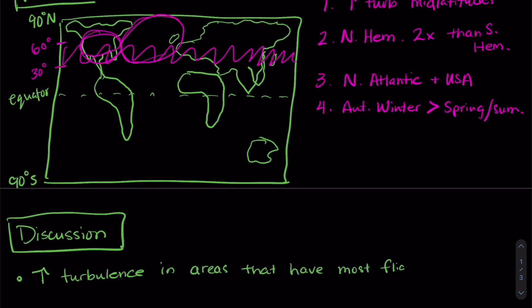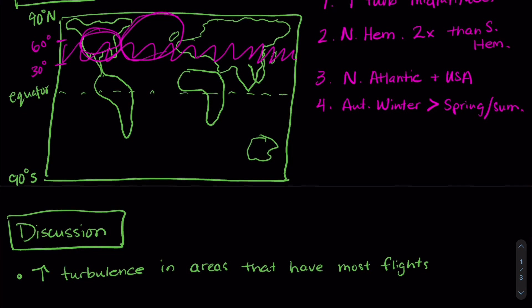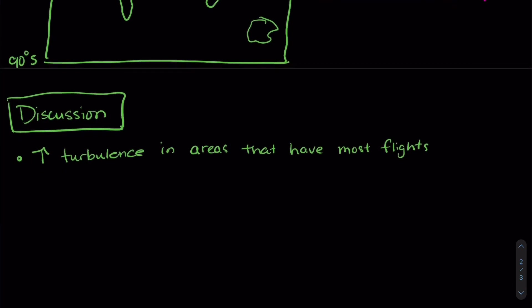So between Europe and the United States, over the United States in the northern hemisphere, we have the most flights. So our increase in turbulence is likely to cause a lot of damage or injuries because it's in an area where a lot of people actually fly.